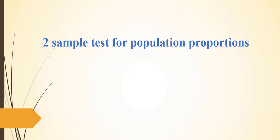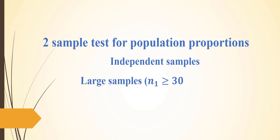Hi, in this video I will be talking about two sample tests for population proportions. This will be for independent samples and we also have large samples. Sample 1 is greater than or equal to 30 and sample 2 is also greater than or equal to 30.